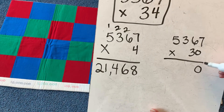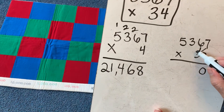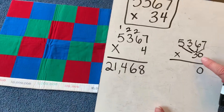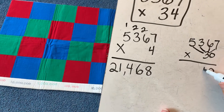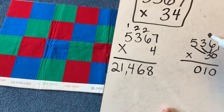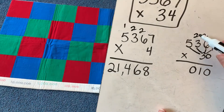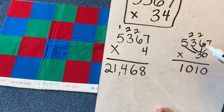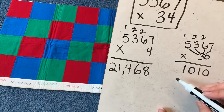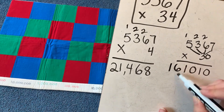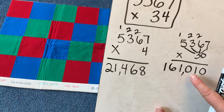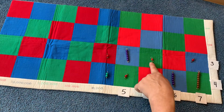We have to multiply this times this, this times this, this times this, and this times this. So 3 is the multiplier. 3 times 7 is 21, carry the 2. 3 times 6 is 18, plus 2 is 20 — put a 0 here and carry the 2. 3 times 3 is 9, plus 2 is 11 — leave 1, carry the 10. 3 times 5 is 15, plus 1 is 16 — nothing left to carry so I write the whole 16. Count over three digits, put a comma: 161,010.